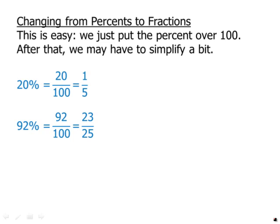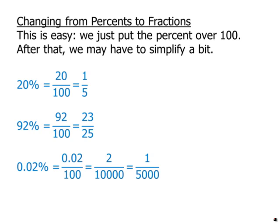92% is 92/100, which is 23/25. 0.02% is 0.02/100, or 2/10000, and that simplifies to 1/5000. So, all three of them very easily become fractions.